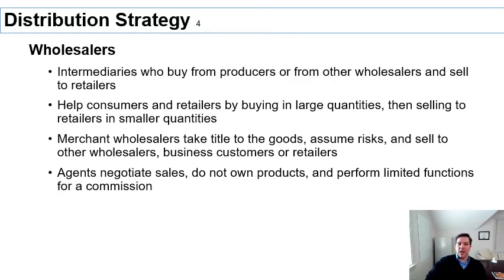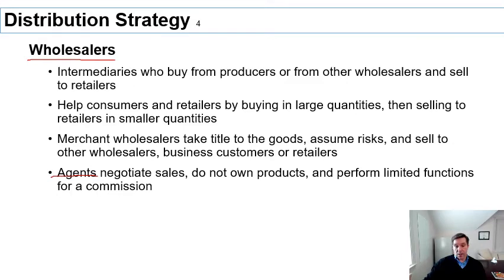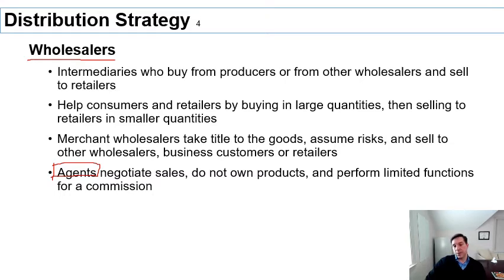Within wholesalers, there is a type called an agent, which is different from a traditional wholesaler because it does not take ownership of the products. Traditional wholesalers buy the product from the manufacturer and sell it to retailers or other wholesalers — if something happens to the product in transit, it's their problem. Agents, however, just bring people together. They may have information about where customers are or help negotiate, but they do not take ownership of the product.